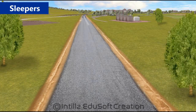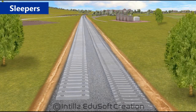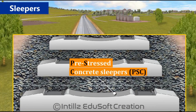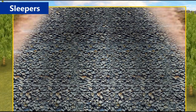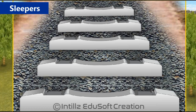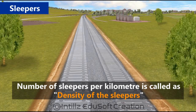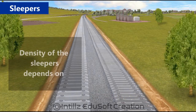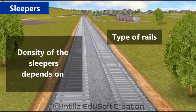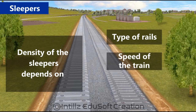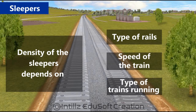On the ballast bed, pre-stressed concrete sleepers are laid. The pre-stressed concrete sleepers are called PSC sleepers. These sleepers are the components on which the railway track is laid. The PSC sleepers are laid at predetermined distances. The number of sleepers per kilometer is called the density of the sleepers. The density depends on the type of rails, speed of the train, and type of trains running on the sleepers.